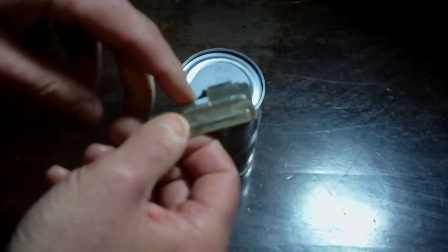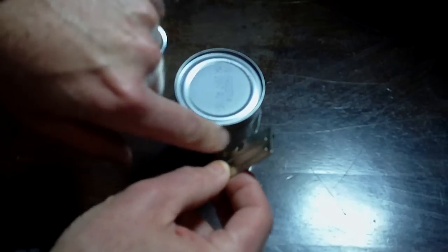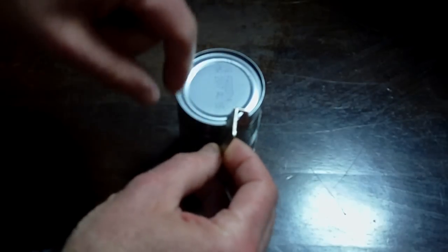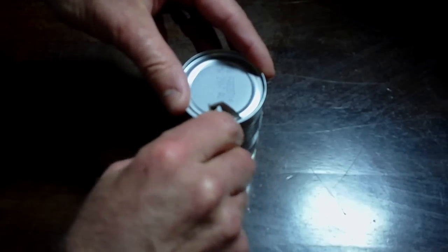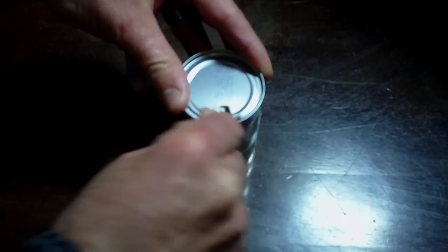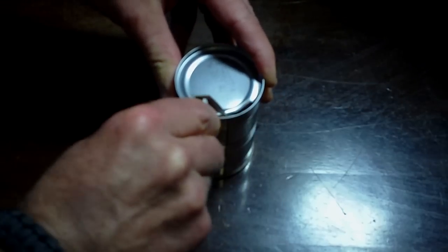There's that little notch there that you have to put underneath the lid of the rim of the can. And then you just force the blade down in, and then just keep on going all the way around.